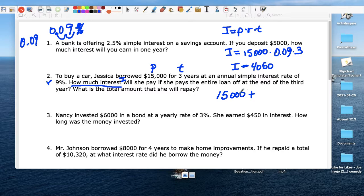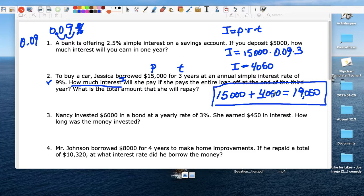Well, you have to pay $15,000, right? You have to pay that back. You have to pay $15,000 plus the extra, the interest. So you end up paying $19,050. This is the interest and this is your total that you end up paying.